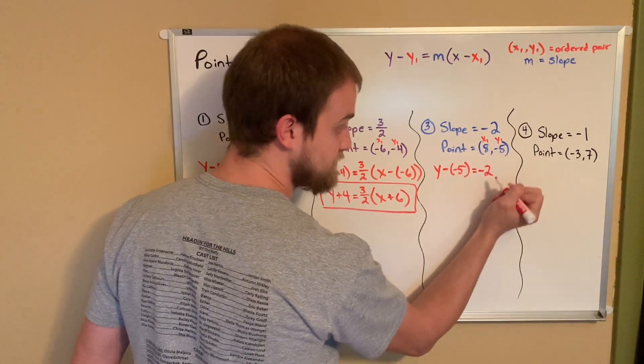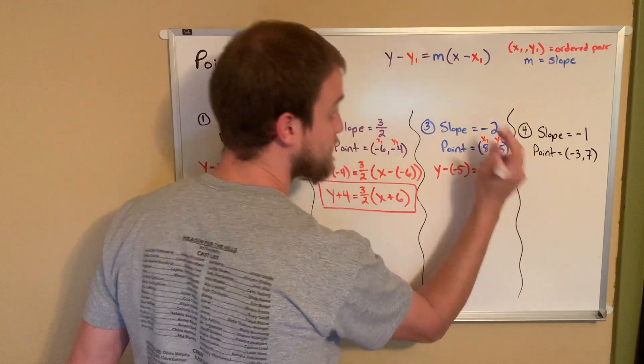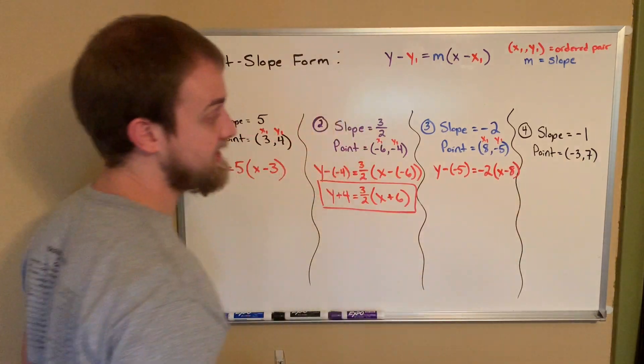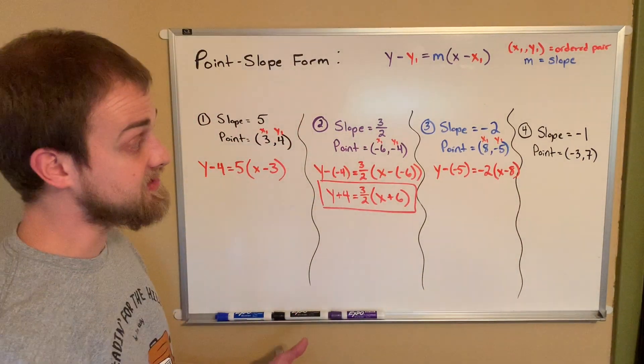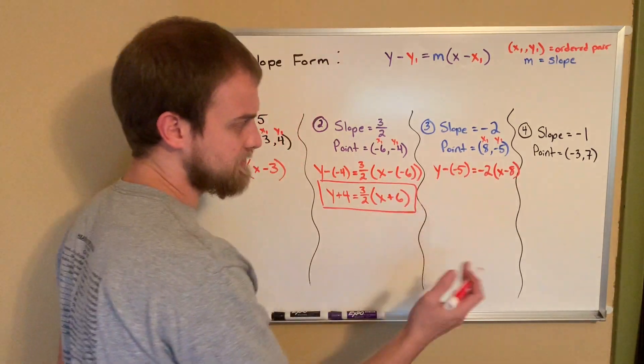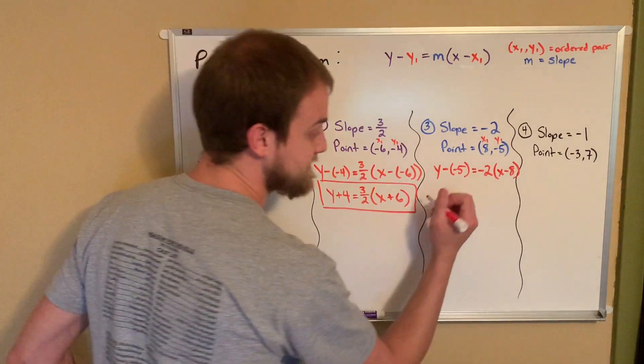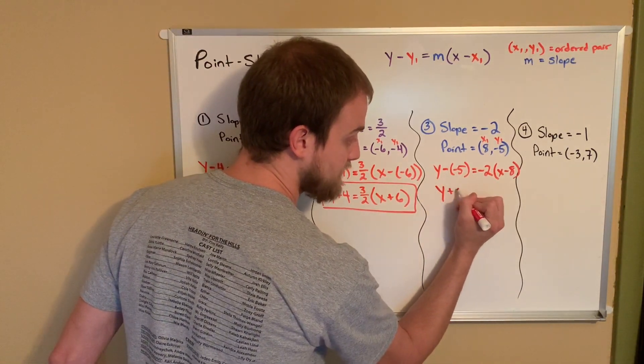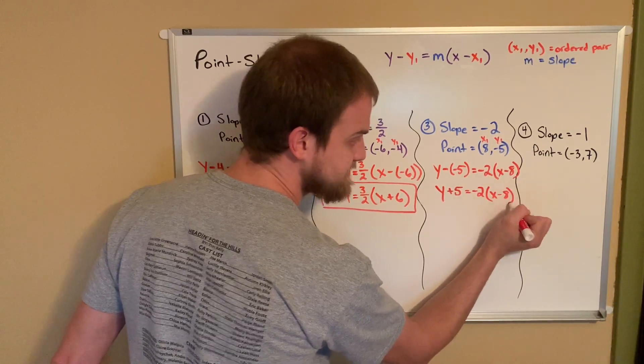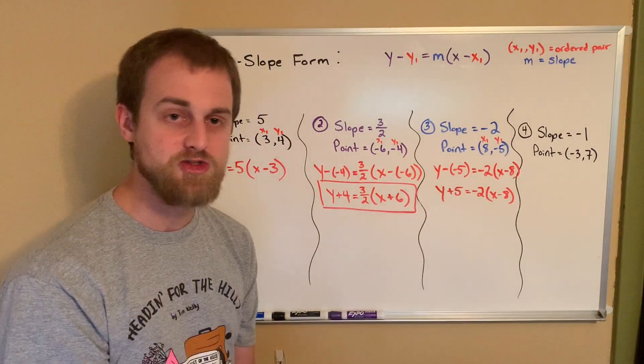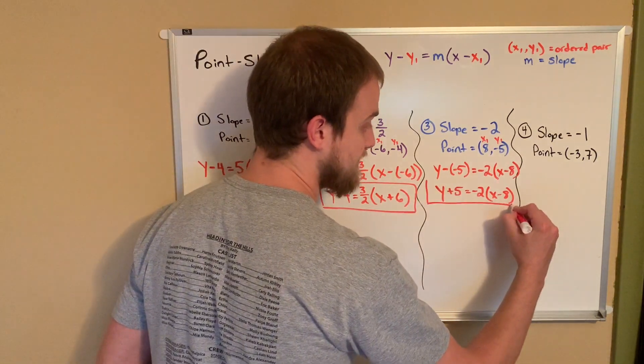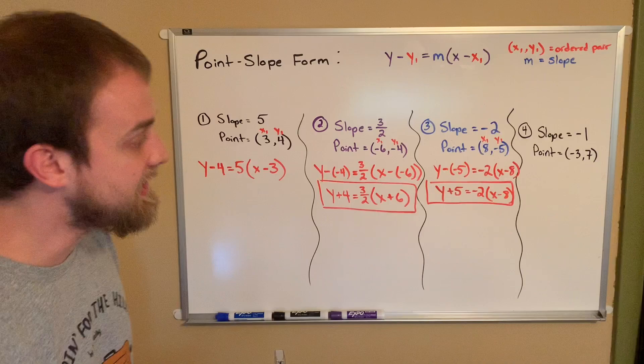Looking at number 3, y minus y sub 1 is negative 5. So y minus negative 5 equals my slope, which is negative 2, times the quantity of x minus just a positive 8. So x minus 8. Now, do you see any cleaning up that needs to happen? I do. Right here. We don't want this minus and negative idea. And remember, we can simply just write y plus 5 instead. Minus 2. The minus 8 is okay. That's nice and neat to look at. There's not this double sign thing happening. So we're in good shape. So notice we have y plus 5 equals negative 2 times the quantity of x minus 8.